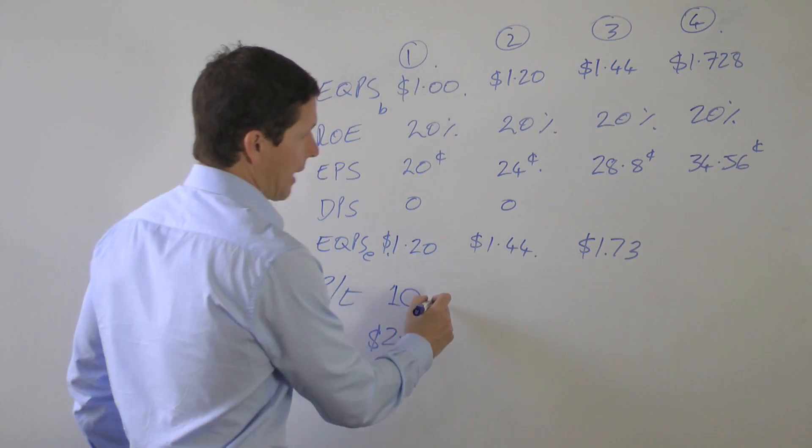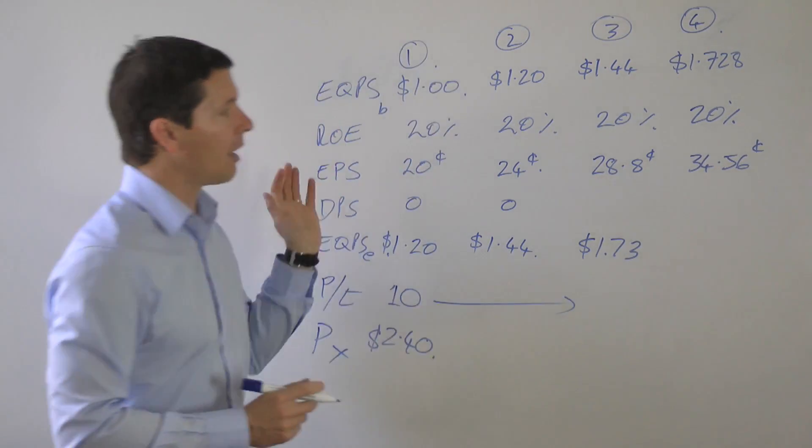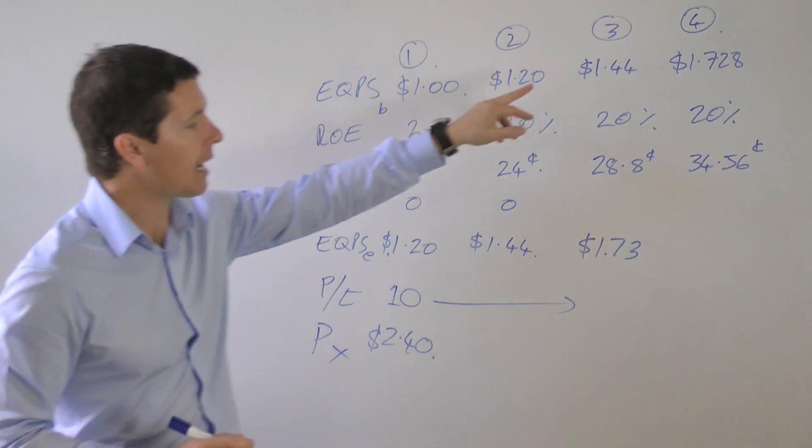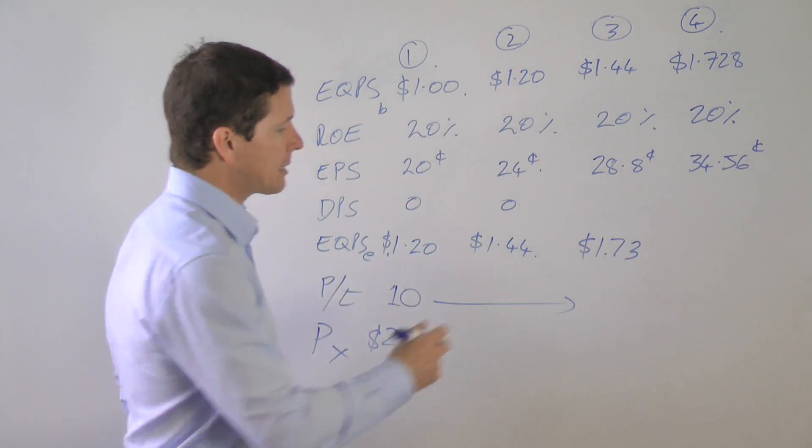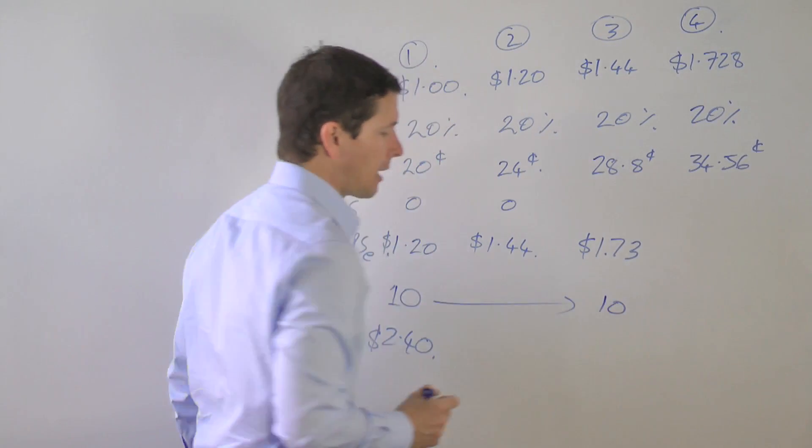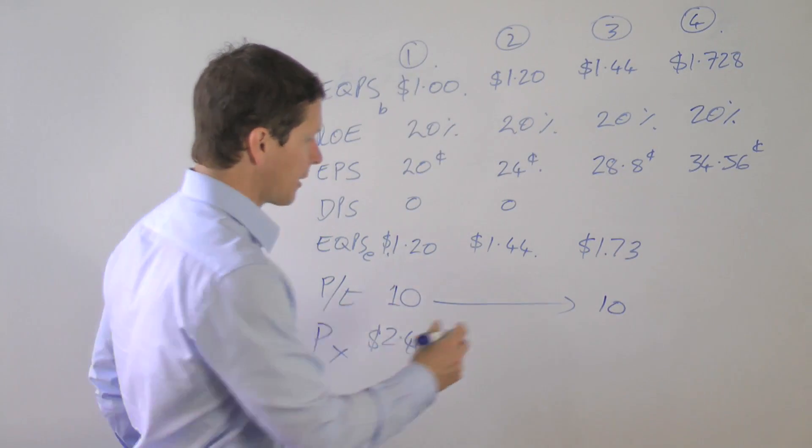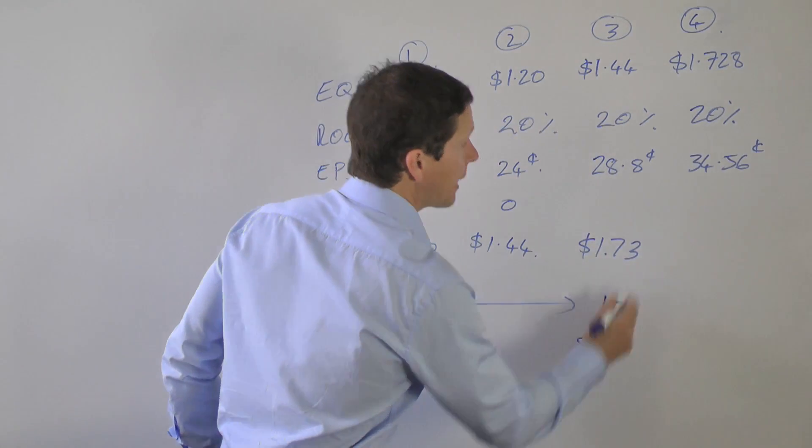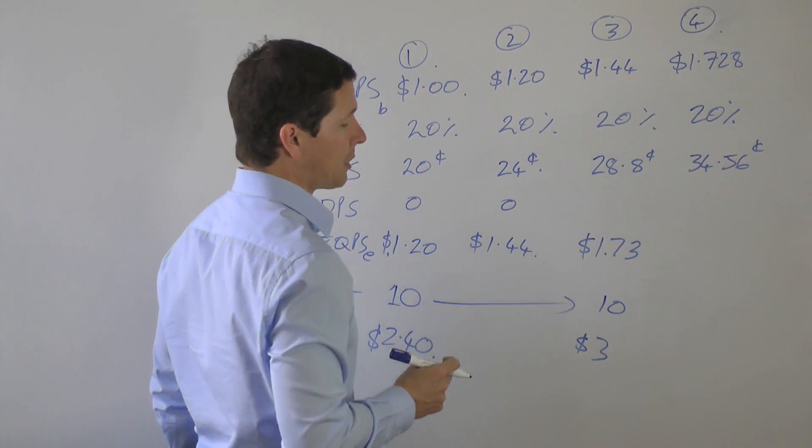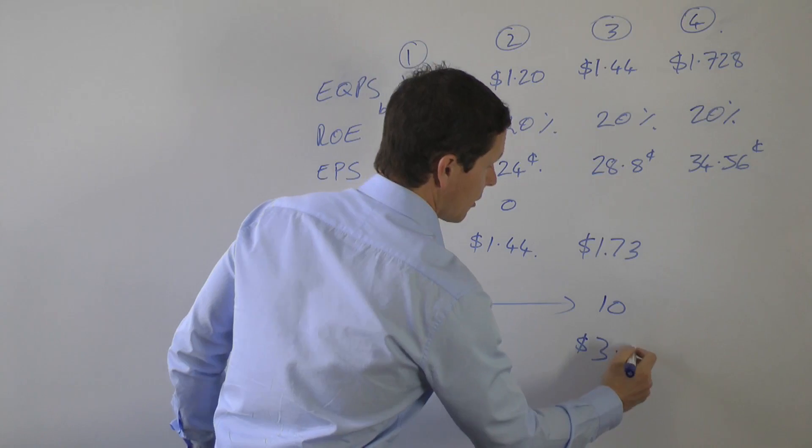We don't receive any dividends through the life of the investment and at the end, in this case of the third year, we sell the shares on a PE of 10 as well. That means we're going to be selling the shares at 10 times the earnings in the fourth year, or $3.45.